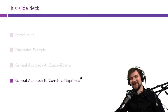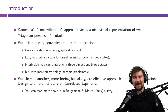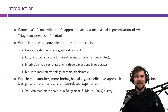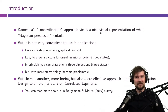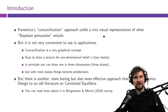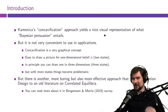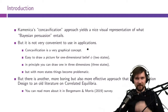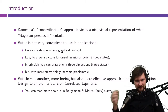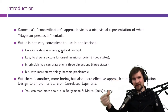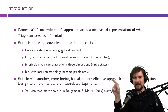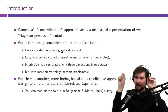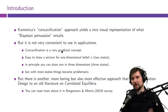I might reconsider this order for next year's course. So what can we say about the concavification approach? It yields a nice visual representation of what Bayesian persuasion entails. If you understand this visual representation, it's quite helpful, but the truth is it's not really super convenient to use — it's a very graphical concept.